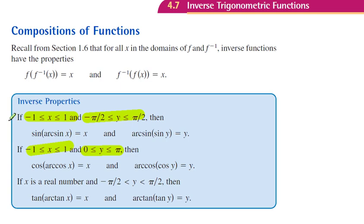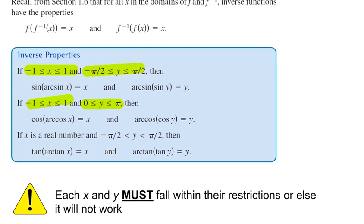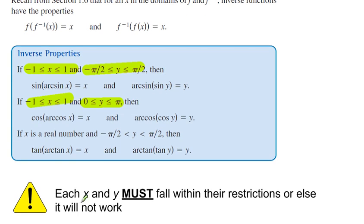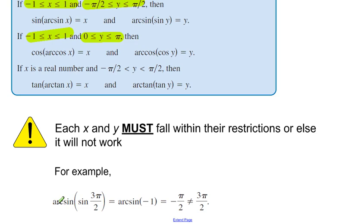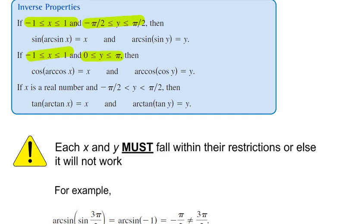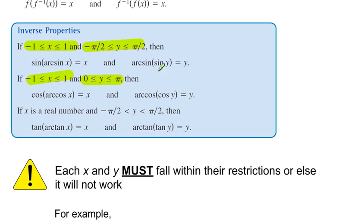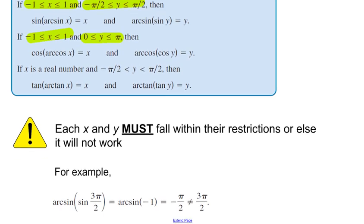Let me just give an example of when this doesn't work, and then we're going to do some examples of when they do. So each x and y must fall within the restrictions, or else it will not work. Here's an example. This is arc sine of sine of 3 pi over 2. So that means we have this, that means that this value, this y value, or in this case, in this example, this 3 pi over 2 must fall within negative pi over 2 and pi over 2.